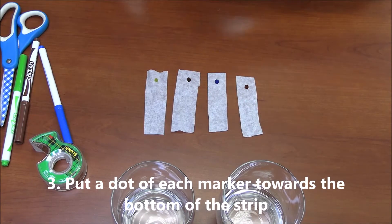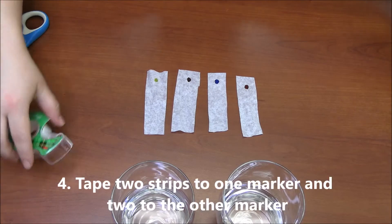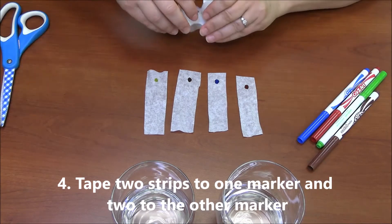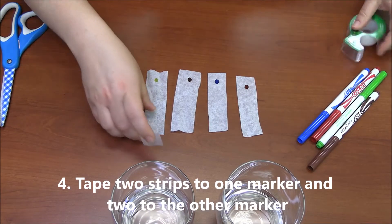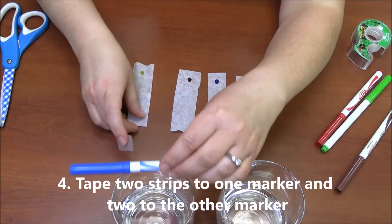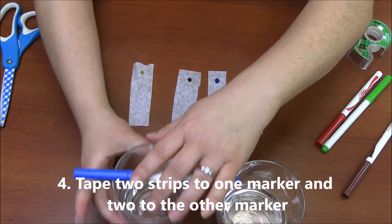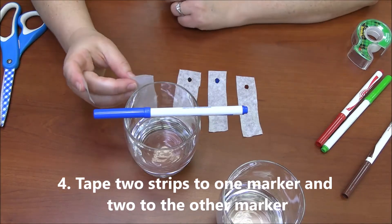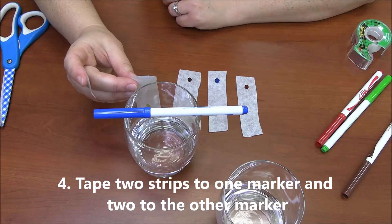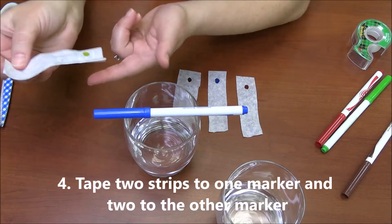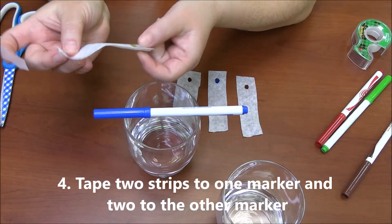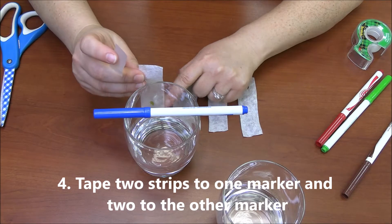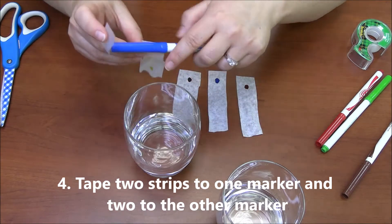And then once we're done with that, we're going to get our tape and attach them. What I want you to do is put your marker on top of the glass to see - you want to have the end of the filter just stick barely into the water. So I think that might be good right there.